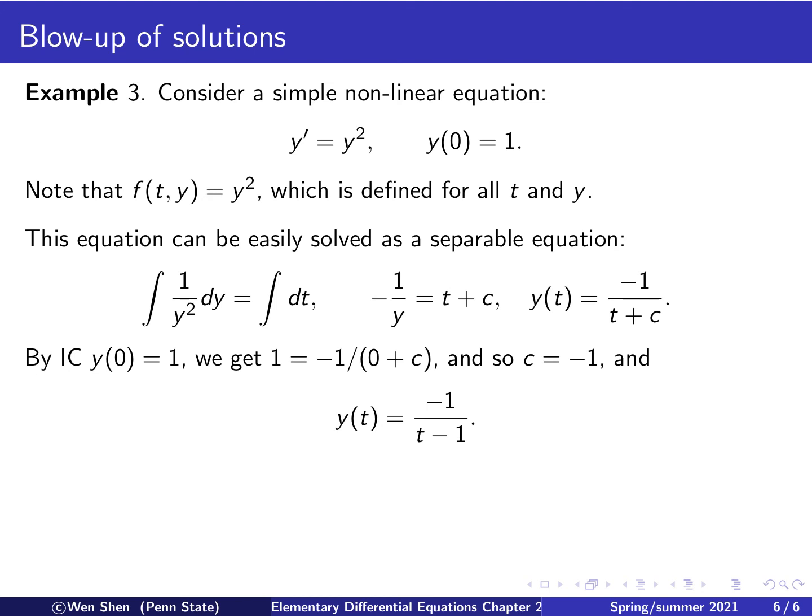And we can find the constant c by the initial condition, y(0) is 1. Put t to be 0, 0 plus c down here is c, so negative 1 over c is 1, and so we found that c is negative 1.